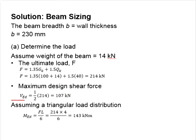Assuming the load acts on the beam in the form of triangular load distribution, the moment load acting on the beam will be given by equation FL per 6, which is 143 kN meter.